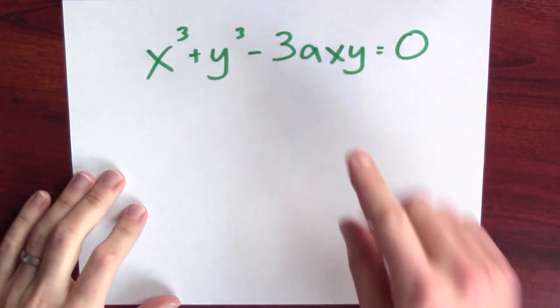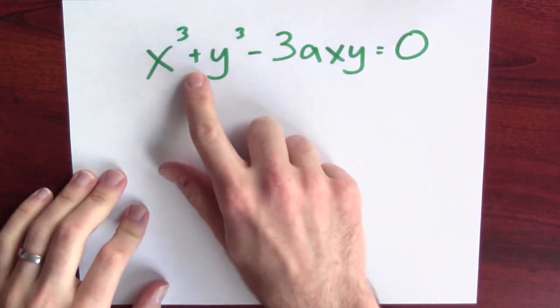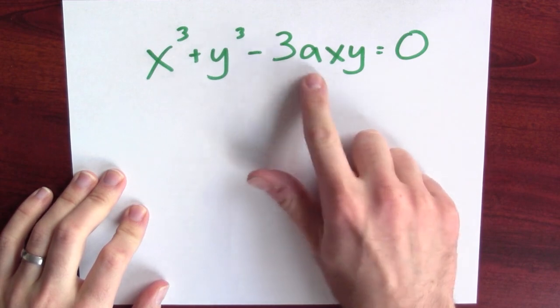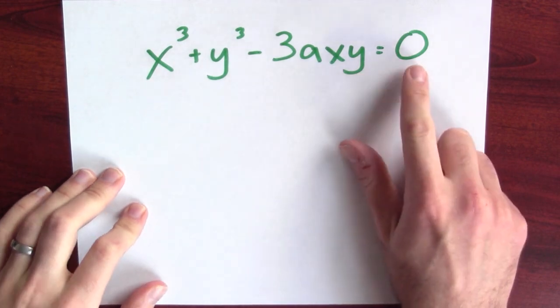The folium of Descartes is an algebraic curve carved out by a certain equation. By which equation? This equation, x cubed plus y cubed minus 3axy equals 0.